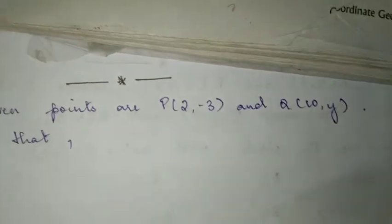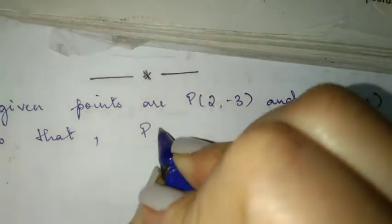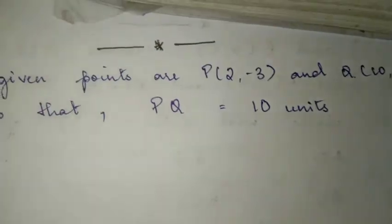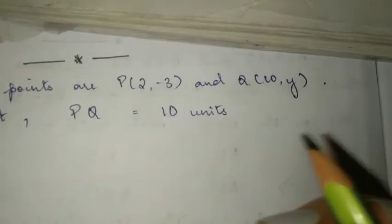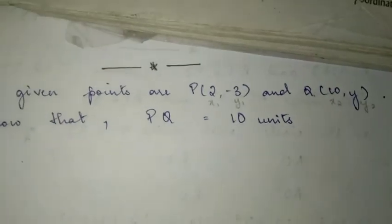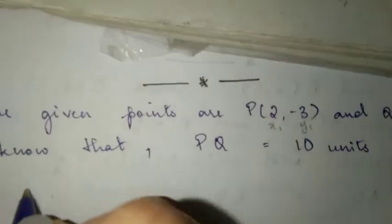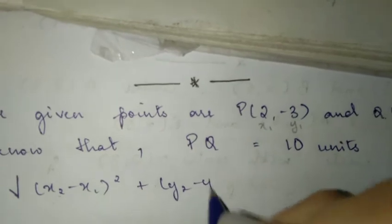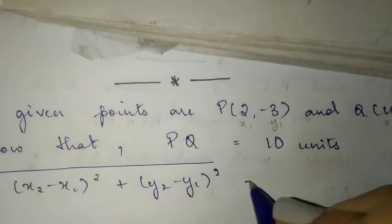First, we will write down what's been given to us. The given points are P(2, -3) and Q(10, Y). Then, distance between P and Q — we know that PQ is equal to 10 units, which is already given in the question. So after this, we apply the distance formula, which is equal to 10 units. The distance formula is: square root of (X2 minus X1) whole square plus (Y2 minus Y1) whole square, and that will be equal to 10.